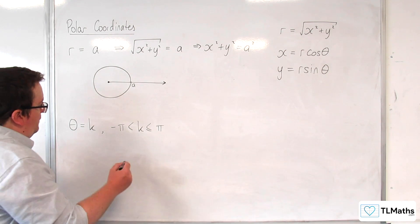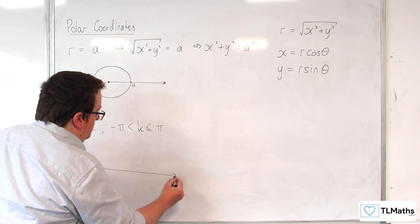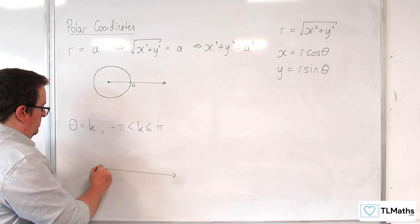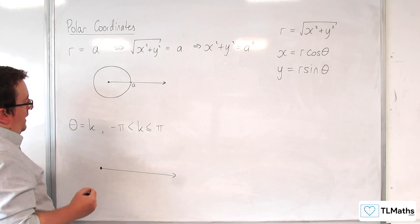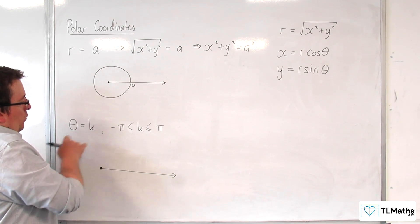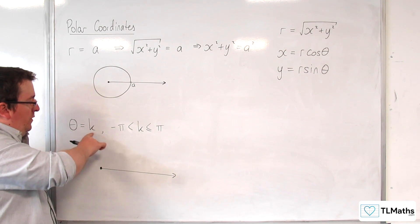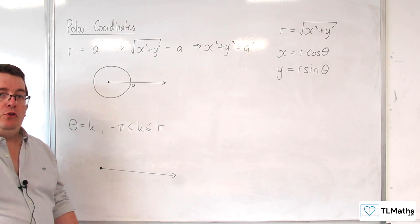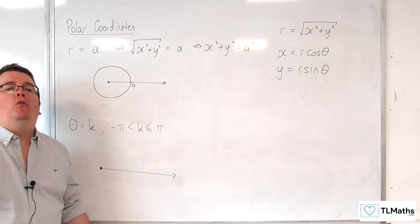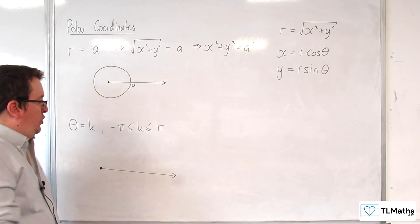So if this is your initial line, here's the pole, what you're saying is that we're looking for all of the points where theta is equal to pi over 4, for example.